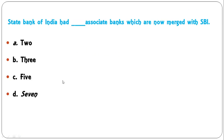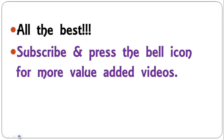State Bank of India had how many associate banks which are now merged with SBI — 2, 3, 5, or 7? There were seven associate banks which were merged into SBI, and now there is only a single entity.